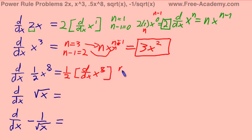And then we find our n and our n minus 1. Then we plug everything back in. One-half times 8 times x to the 7th, which equals 4x to the 7th.